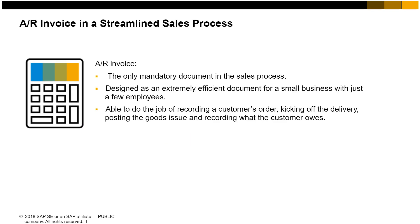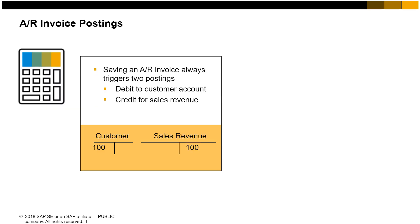For our streamlined process, we will use just one document: the AR invoice. The AR invoice is the only mandatory document in the sales process and is designed to be an extremely efficient document for small businesses with just a few employees. The AR invoice can do the job of recording the customer's order, kicking off the delivery, posting the goods issue, and recording what the customer owes. Saving an AR invoice always triggers two postings: a debit to the customer account to show what is owed, and a credit for sales revenue.